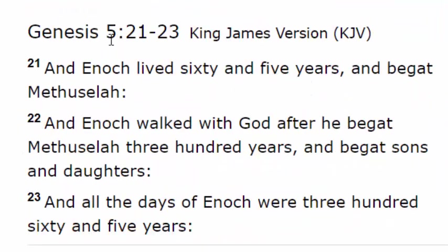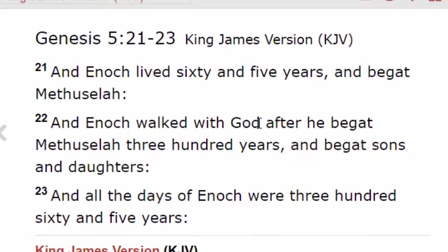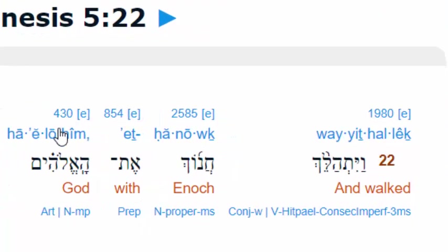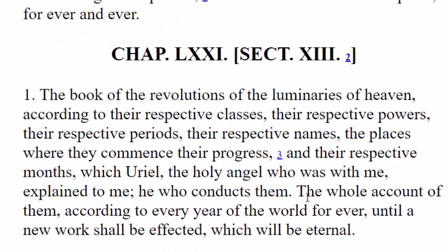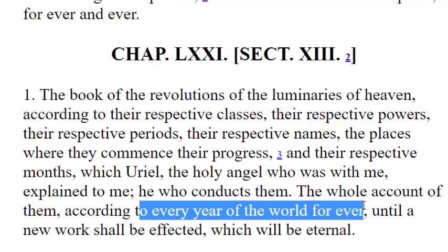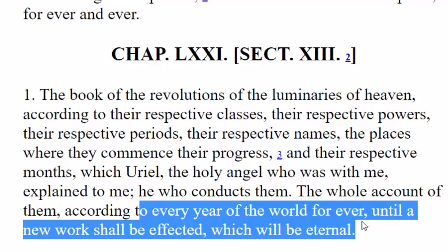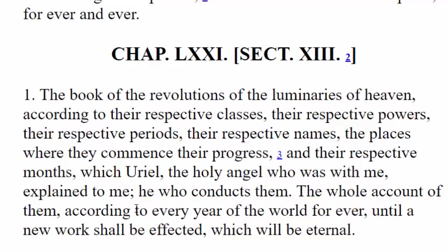That's what Genesis chapter 5, verse 22 is saying when it says Enoch walked with God. When you look back at the Hebrew you see it says Enoch walked with the Elohim, which refers to all beings in the spirit world including the angels — and the angel Uriel. Back in chapter 71 it says Enoch was told the whole account of them — talking about the luminaries — according to every year of the world, forever, until the new work which shall be eternal. In other words, what we're about to see is how the Father's sacred calendar works.